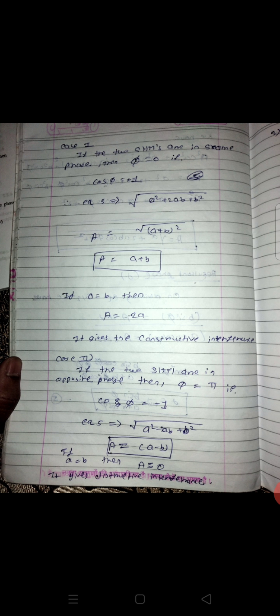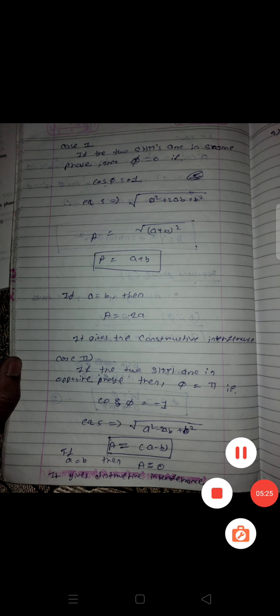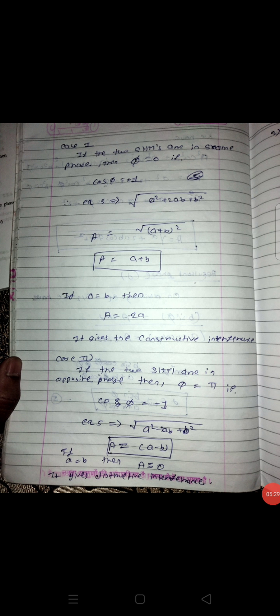When the resultant is very small or minimum, we say there is destructive interference. Case two: if the two SHMs are in opposite phase, then φ = π. So cosφ = −1. Putting cos π = −1 into equation 5, we get A = under root of (a² − 2ab + b²), which is (a − b)². So A = a − b. If a = b, then capital A = 0. This gives destructive interference and the minimum output is zero.